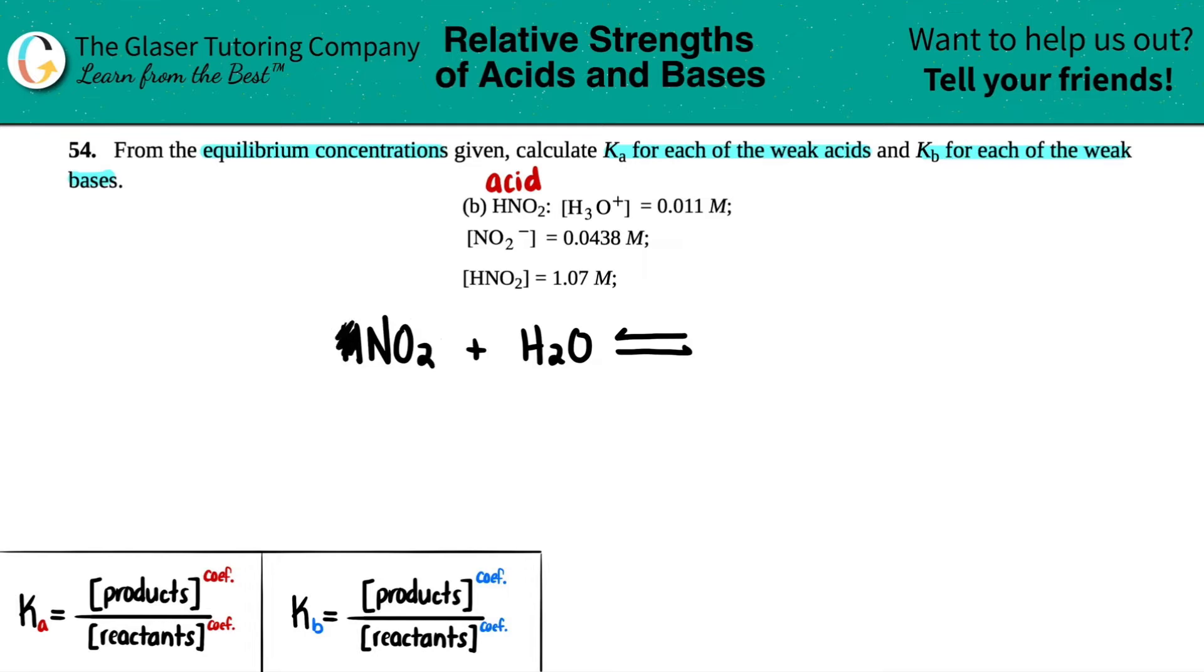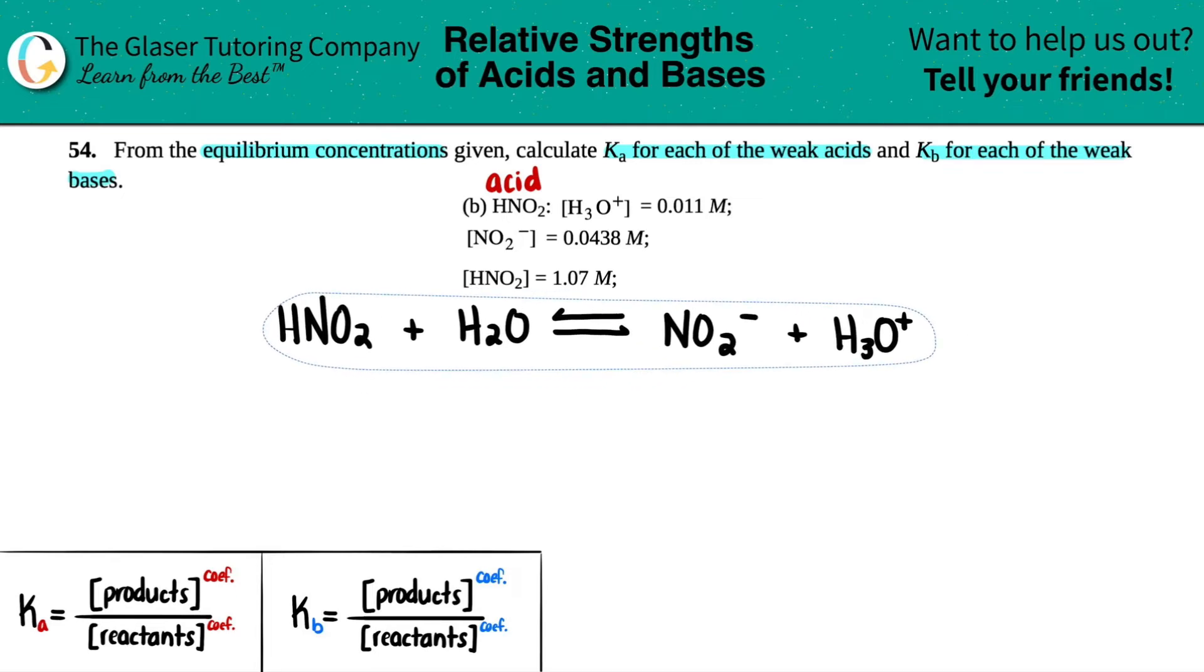And then remember, the acid always drops a hydrogen. So that's why you have a nitrite ion concentration. And then the H2O will add a hydrogen. So the two becomes a three. And that's why you make hydronium. Let's just maybe make this a little bit symmetrical.